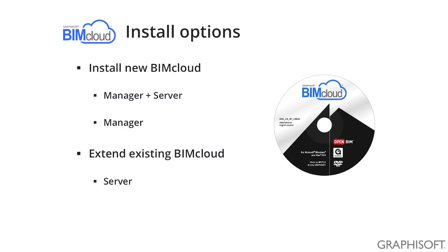Once you have all the prerequisites for the installation, just pop in the BIMcloud DVD, which will ask you if you want a new BIMcloud or if you want to extend an existing one. If you do not have BIMcloud in your office, select the first one and then decide which components you would like to install. If you already have BIMcloud, then most likely you will want to extend it with additional components, so select the second option.